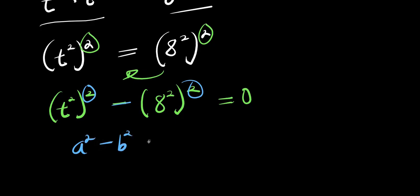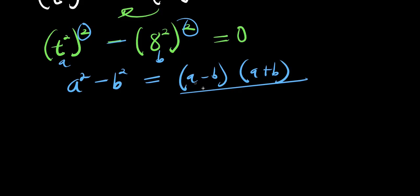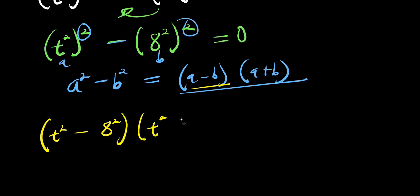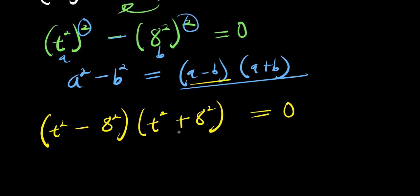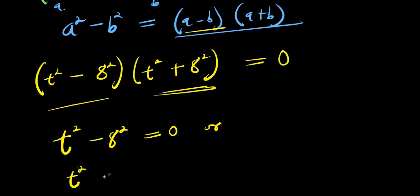Recall that a squared minus b squared equals (a minus b)(a plus b). Here, a is t power 2 and b is 8 power 2. So substituting, we get (t power 2 minus 8 power 2)(t power 2 plus 8 power 2) equals 0. From here we equate each factor to zero: t power 2 minus 8 power 2 equals 0, or t power 2 plus 8 power 2 equals 0.